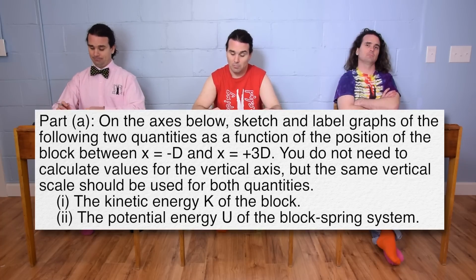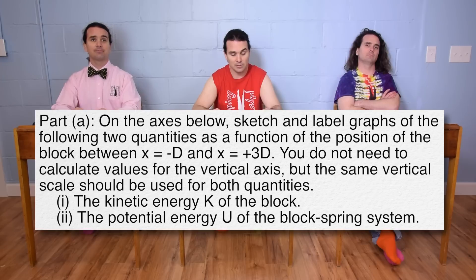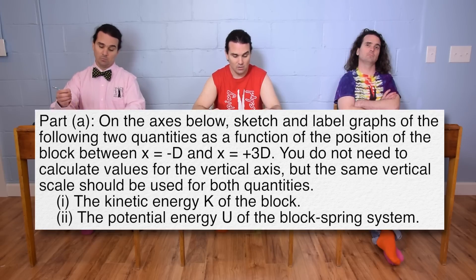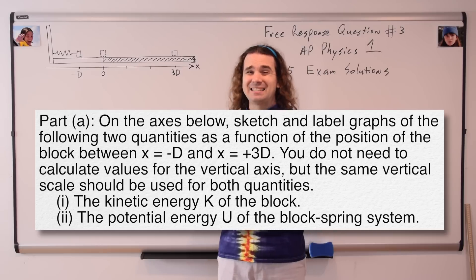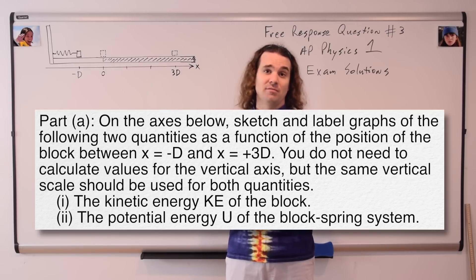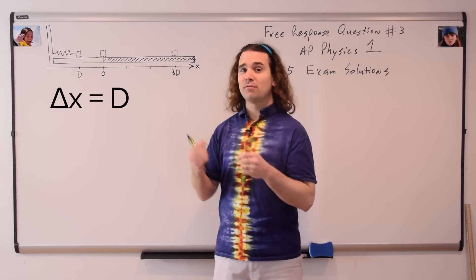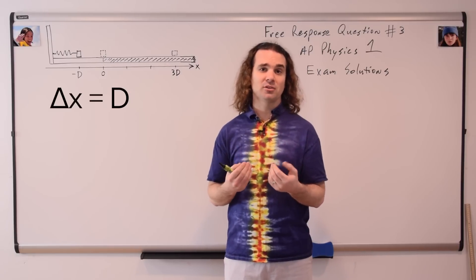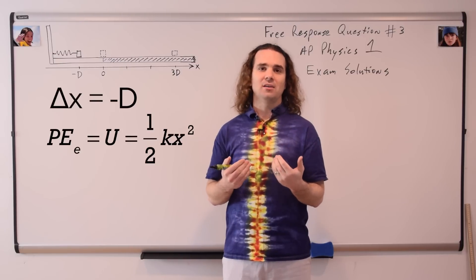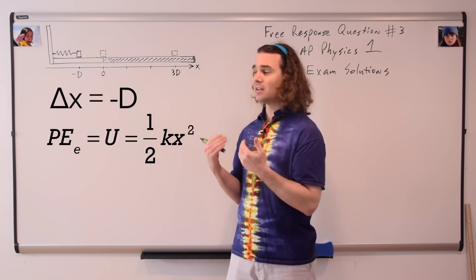On the axis below, sketch and label graphs of the following two quantities as a function of the position of the block between x equals negative D and x equals positive 3D. You do not need to calculate values for the vertical axis, but the same vertical scale should be used for both quantities. Part A-i: the kinetic energy K of the block. Part A-ii: the potential energy U of the block-spring system. For the record, because K stands for spring constant, I severely dislike using K for kinetic energy. I will be using capital KE instead. Also, because the block is displaced to the left, I would much prefer to use negative capital D for displacement. I know because x in one-half k x squared for elastic potential energy is squared, the answer ends up being the same. However, people so often forget direction — it's just important.